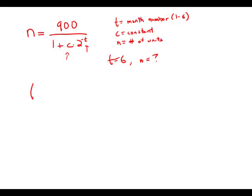So, statement number 1 tells us, in month number 1, when T equals 1, the company is scheduled to produce 180 units. So N equals 180. Well, if we know that 180 equals 900 over 1 plus C times 2 to the negative 1, well, that would allow us to solve for C.